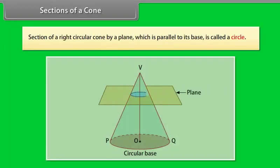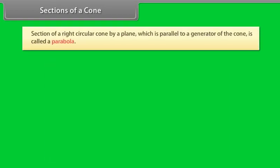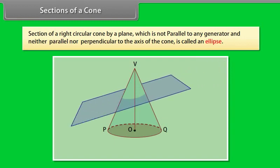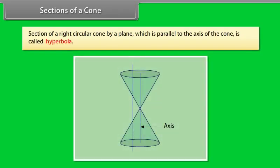Now we will discuss various sections of a right circular cone. A section by a plane parallel to its base is called a circle. A section by a plane parallel to a generator of the cone is called a parabola. A section of a right circular cone is called an ellipse. A section by a plane parallel to the axis of the cone is called a hyperbola.